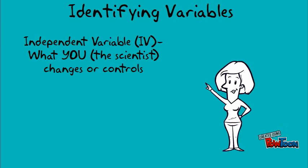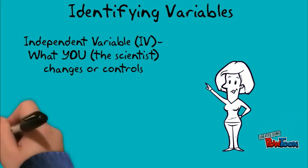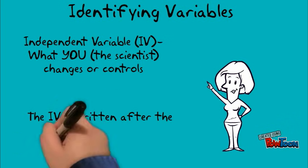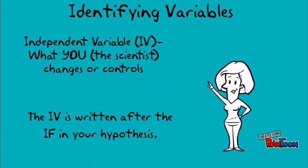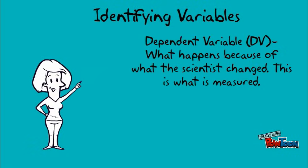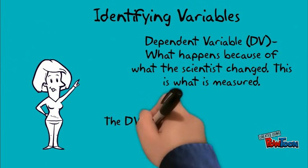The independent variable is what you change or control. It is written after the if in your hypothesis. The dependent variable is what happens because of what the scientist changed. This is also what is measured. It is found after the then in the hypothesis.